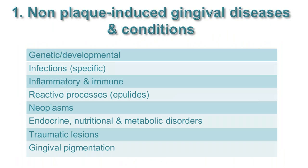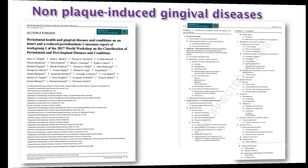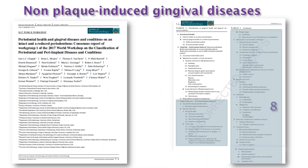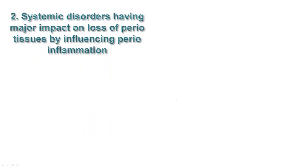The non-plaque induced gingival diseases and conditions include these major categories: genetic and developmental, infections, inflammatory/immune, reactive processes, neoplasms, metabolic and endocrine conditions, traumatic lesions, and pigmentation. This is the consensus paper from work group one, which I chaired with Brian Neely. I'm going to talk through conditions like plasma cell gingivitis, erythema multiforme, pemphigus, pemphigoid, and lupus, in a very practical way.